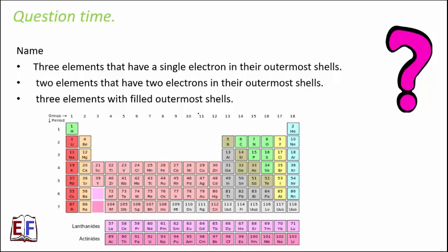Name three elements that have a single electron in their outermost shells. One electron in the valence shell means all these elements belong to group 1. So just go to group 1 and pick any three elements — it could be lithium, sodium, and potassium.